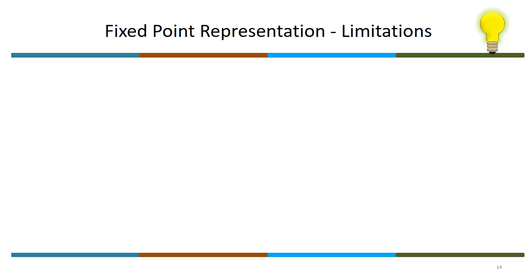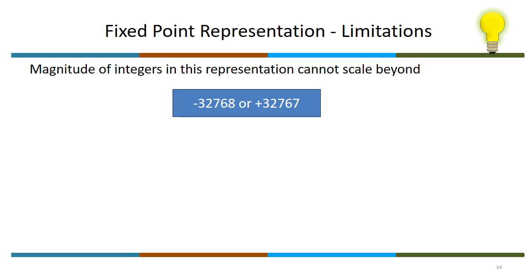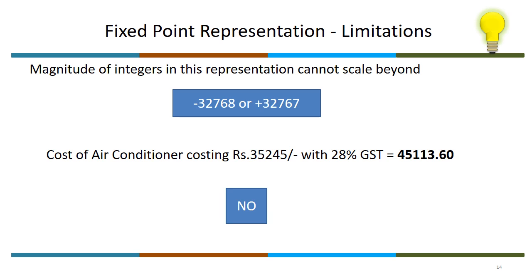Now the limitations. It has certain limitations. The magnitude of integers this representation cannot scale beyond this number. The integer part is very low. Can we represent the cost of an air conditioner with 28% GST? Suppose the cost of my air conditioner is 35,245 rupees, and with GST it becomes 45,113.60. Can we represent this number with fixed point? We can't store it, the answer is simply no.